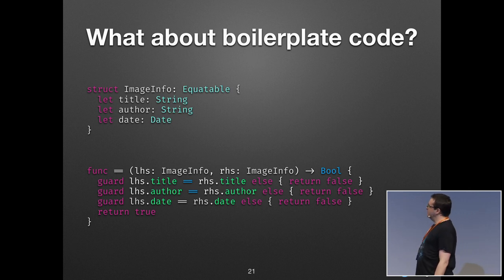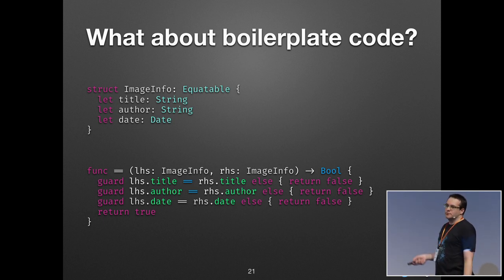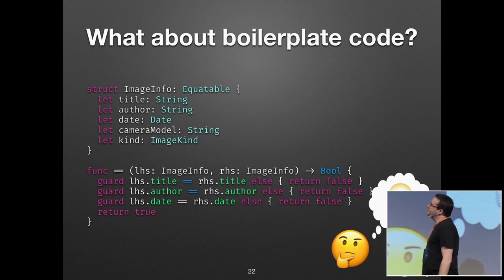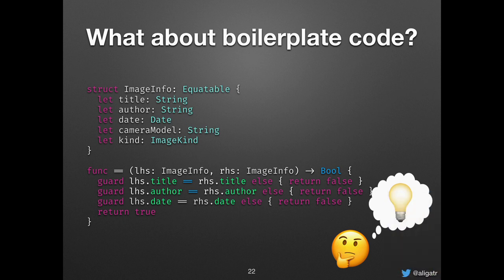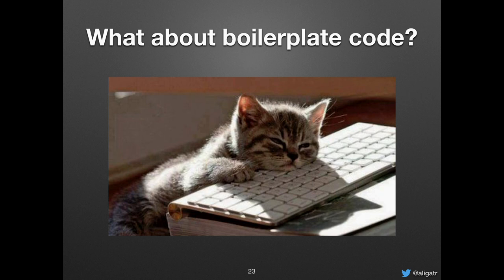For example, an Equatable implementation. If you've ever implemented Equatable, you know it's always repetitive code, and of course we want to automate that — because if somebody adds new properties, they may not be aware of the Equatable implementation and will forget to update it. This leads to quite obscure bugs: the code will still compile and the app will mostly behave correctly, but in cases where you change the data model it won't be able to tell you that values are different. So we're lazy — we don't want to do that manually, we don't want to maintain it, so we're going to use code generation.